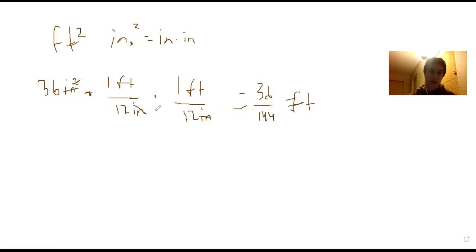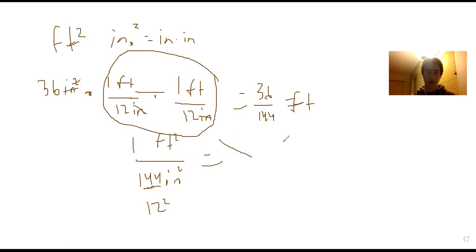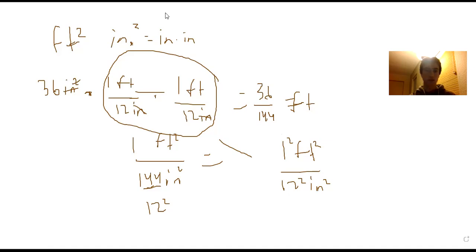Another way of thinking about this is instead of writing out the conversion twice, we can say one foot squared equals 144 inches squared, since 144 is 12 squared. So you can write one foot squared over 12 squared inches squared directly. When dealing with squared units, everything in the conversion factor gets squared as well.